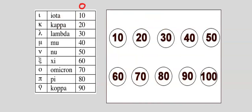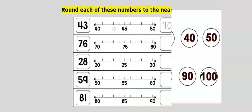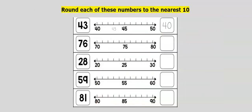Rounding numbers to the nearest ten. Consider numbers between 0 and 10, 10 and 20, 20 and 30, and so on. Let's consider this question: round each of these numbers to the nearest ten.